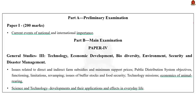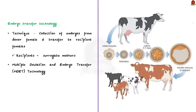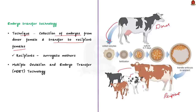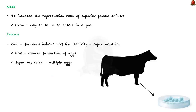Embryo transfer is a technique by which embryos are collected from a donor female and transferred to recipient females. The cow from which we get the embryo is called the donor, and the cow to which we transfer the embryo is called the recipient. These recipient females serve as surrogate mothers for the remainder of pregnancy. This technology is also called multiple ovulation and embryo transfer technology, and the main reason for it is to increase the reproduction rate of superior female animals, used mainly in dairy animals.